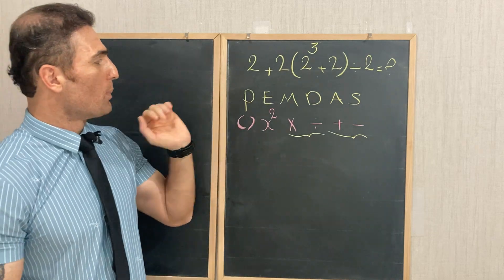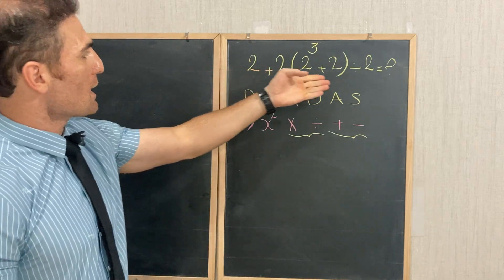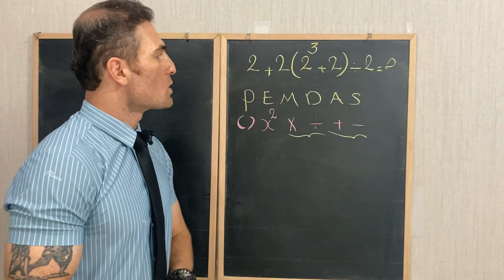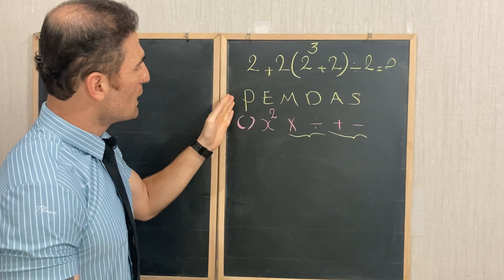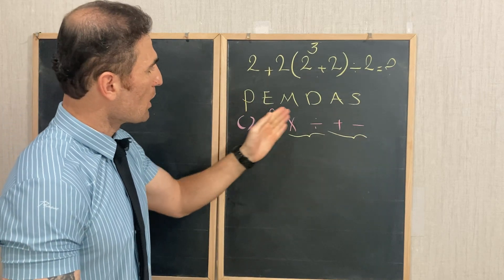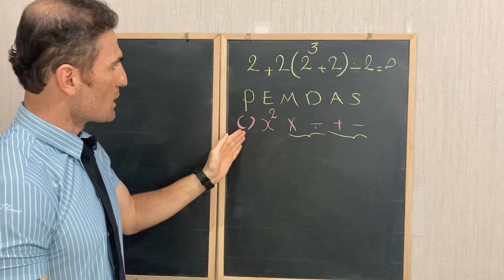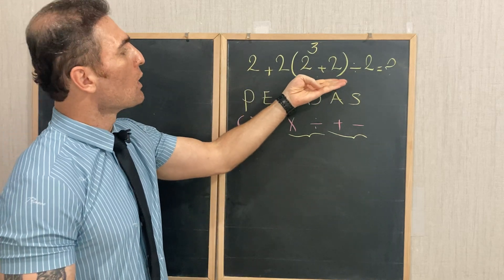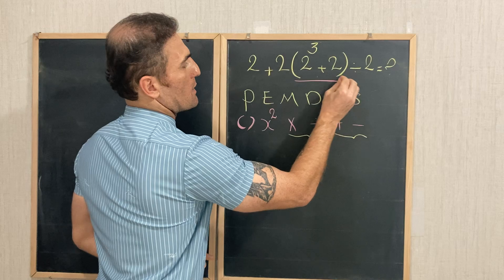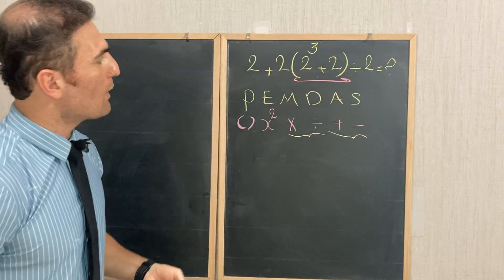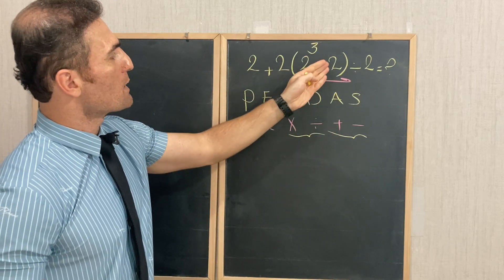Let's apply PEMDAS to our example: find the value of 2 + 2(2³ + 2) ÷ 2. P stands for Parenthesis — do we have parenthesis? Yes, we do. So we need to start with the parenthesis. What do we have inside? 2³ + 2.